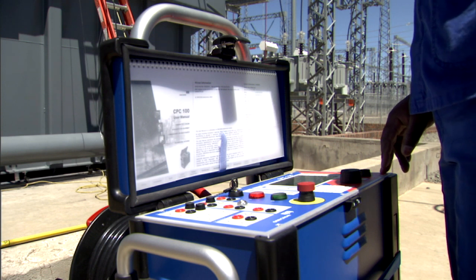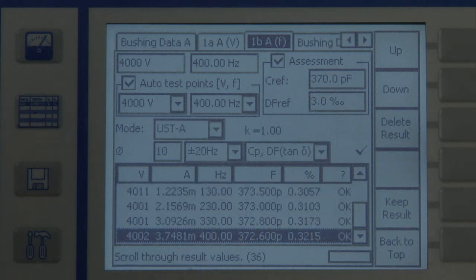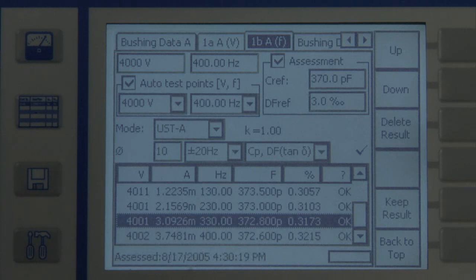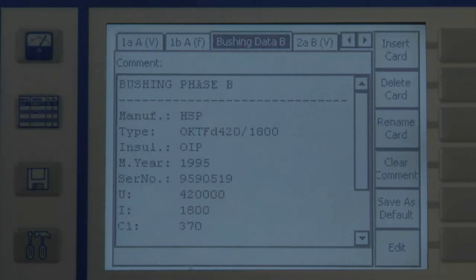The results of both the voltage-dependent measurement of the dissipation factor or the power factor are displayed. This is then repeated for the bushings of phase B, phase C and the neutral conductor.